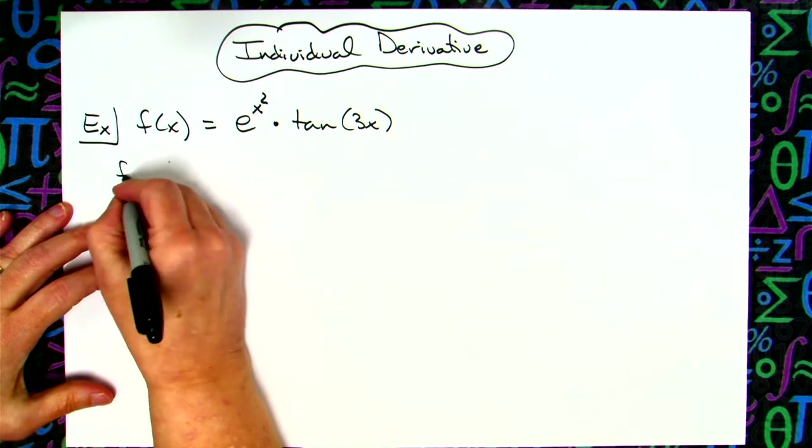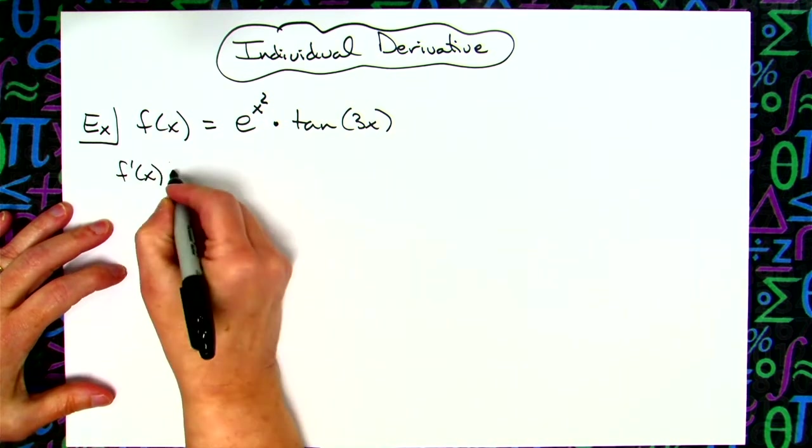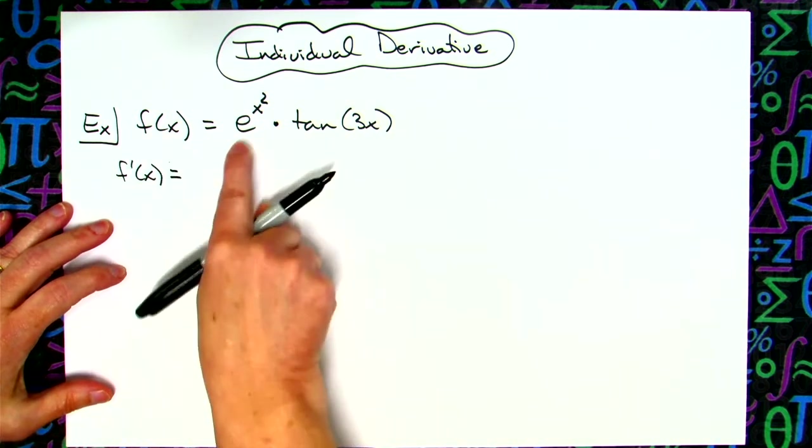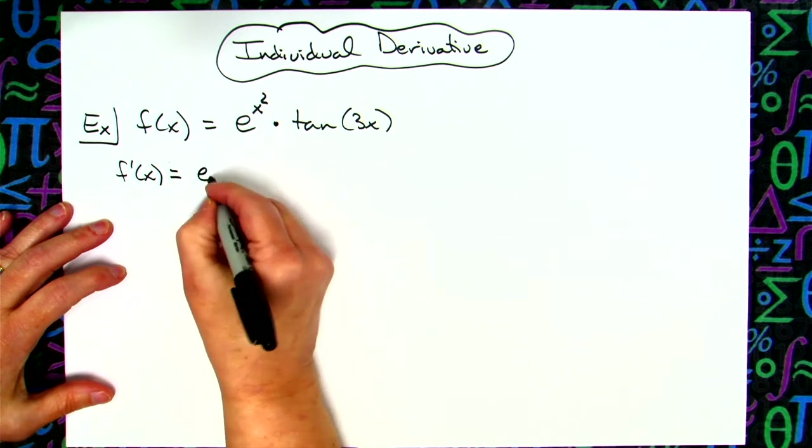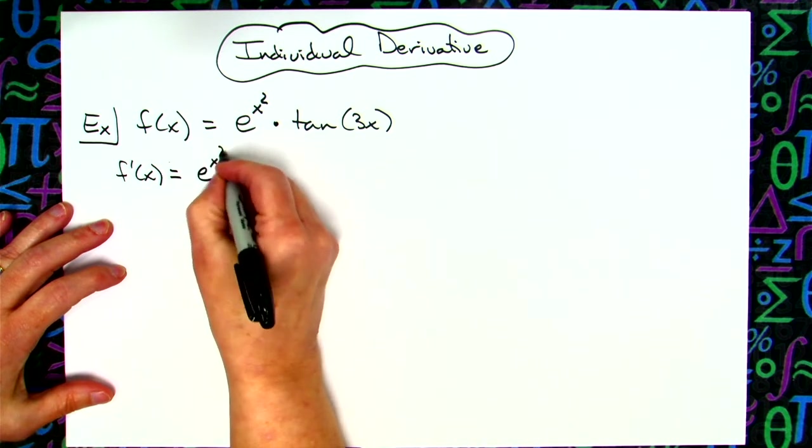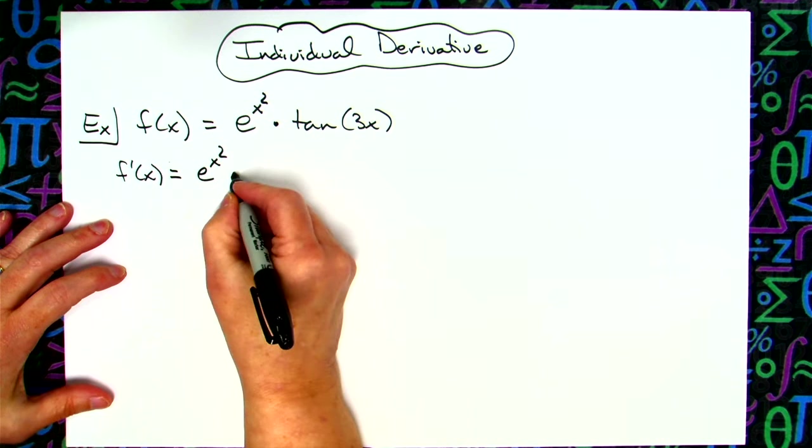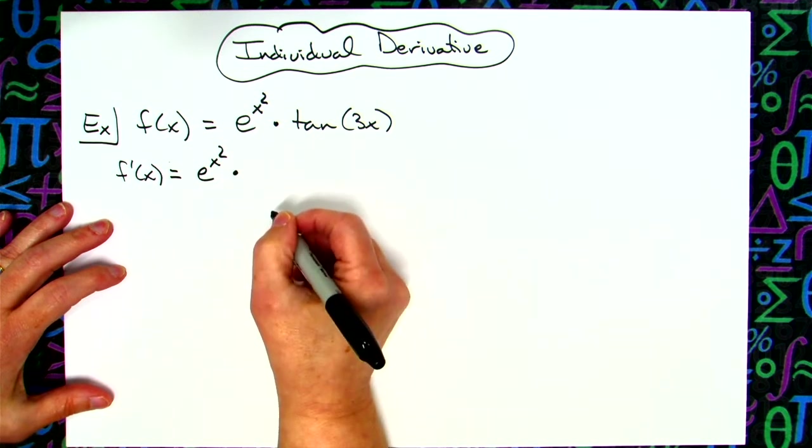So the first thing we'll do here is f prime of x, implementing that product rule. We're going to leave the first term, so e raised to the x squared, and then we will take the derivative of the second one.